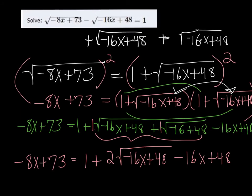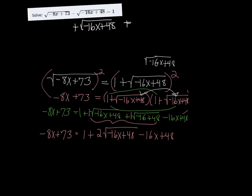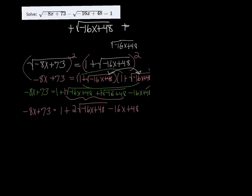At this point, we're ready to, we're going to get ready to square both sides again because we still have a square root. But before we do that, we want to get all the like terms together. So for instance, we have 1 and 48. That comes together as 49.